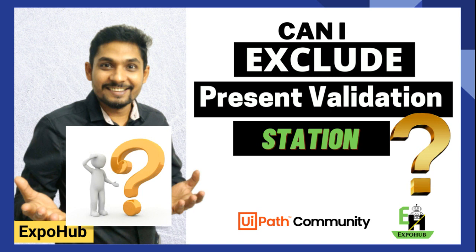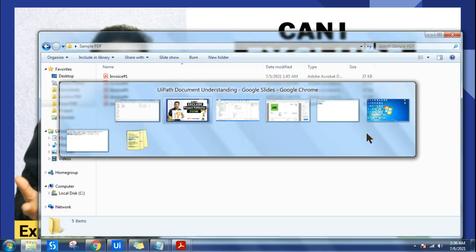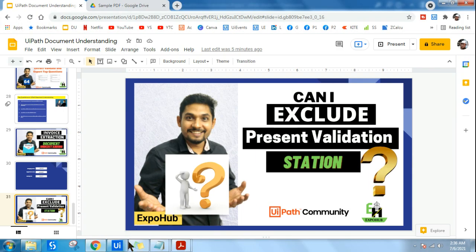Hello and welcome back to the XPOP channel. There is a question: can I exclude Present Validation Station? In document understanding, we use Present Validation Station to validate if the extraction is done properly or not. But how will you automate if every time it prompts you, you have to validate again and again?